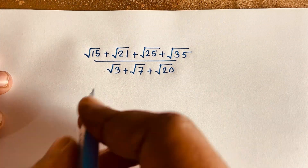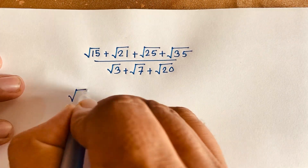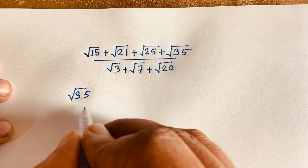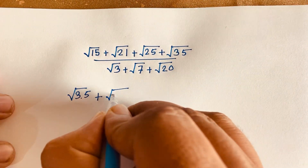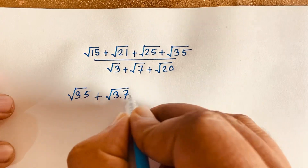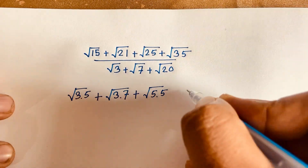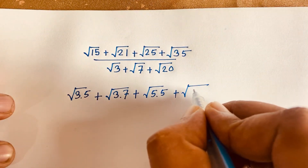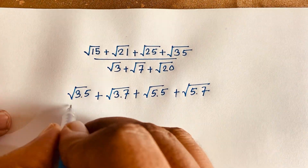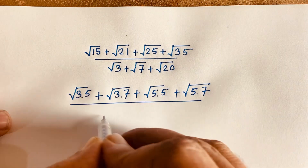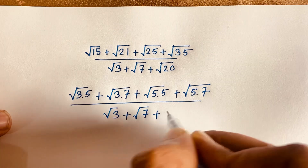First, square root of 15 can be written as square root of 3 times 5, since 3 times 5 is 15. Then square root of 21 is square root of 3 times 7. Square root of 25 is square root of 5 times 5. And square root of 35 is square root of 5 times 7. The denominator has square root of 3, plus square root of 7.